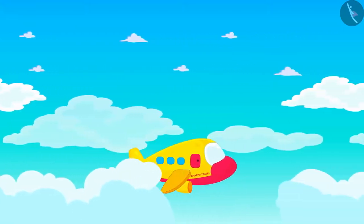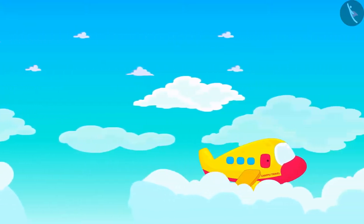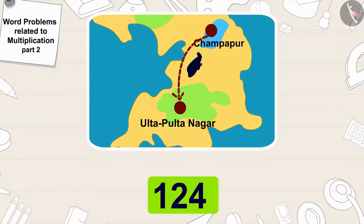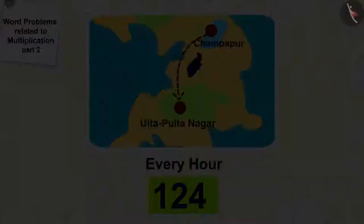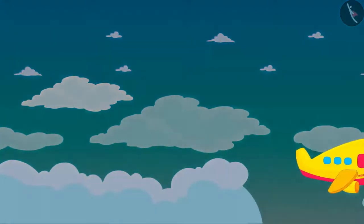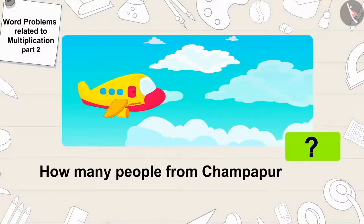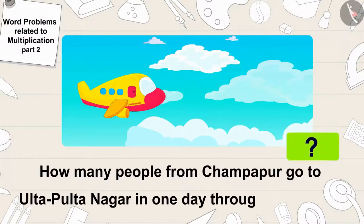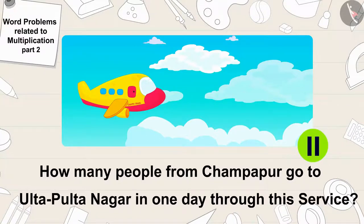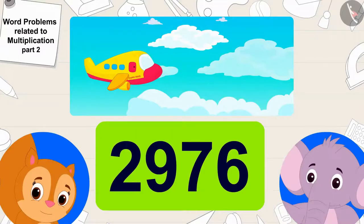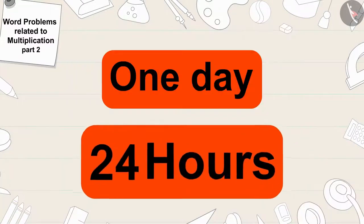The Chapu Travel Company takes 124 people from Champapur to Ulta Pulta Nagar every hour through its airplane service. Children, if the airplane service of Chapu Travel is run all day, can you tell me how many people from Champapur go to Ulta Pulta Nagar in one day through this service? You can stop the video and think about the answer.